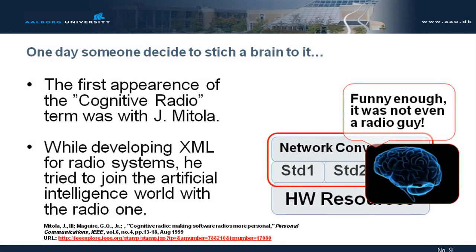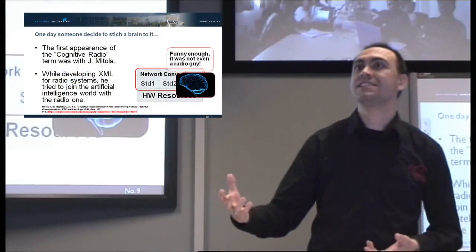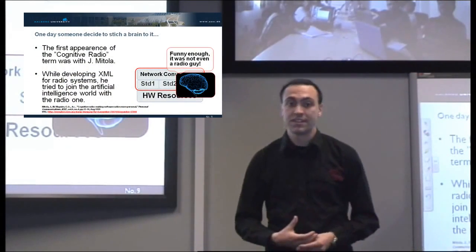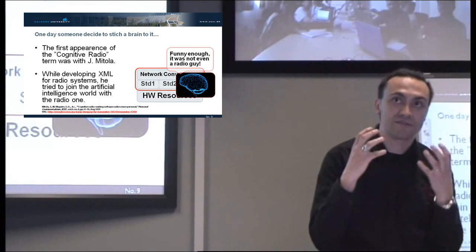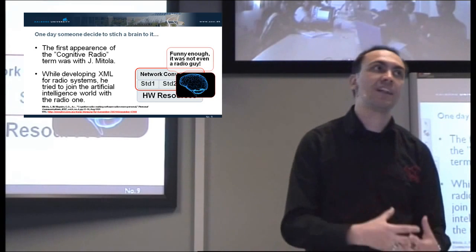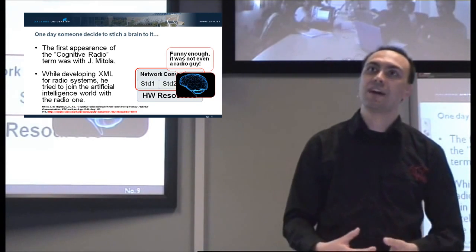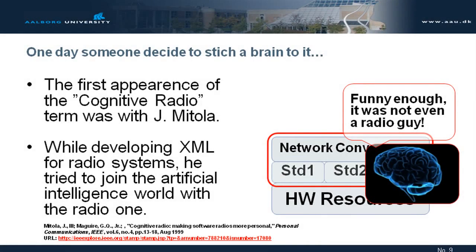Now we know why software-defined radio was useful. Once we have this concept of doing things in software, there was some guy named Joseph Mitola who one day decided: I am developing XML for radio systems so I can easily configure them just with an XML file — easy to write, easy to code. Why don't we take something, still software, that manages these XML files and meta-languages autonomously? Artificial intelligence was, and still is, a big deal in computer science. So this new radio concept was basically invented — funnily enough, it was not even a radio guy. It was mostly a computer science guy who, while developing software for radio, decided: why don't we make radio smart? And so the cognitive radio concept was born.